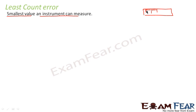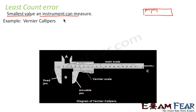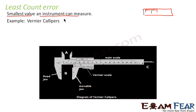When we talk of least count error, in case of certain instruments, the small division of the main scale doesn't coincide with the small division of the vernier scale. The best example of least count error would be the vernier calipers. Vernier calipers is an instrument used to measure the thickness or length of very thin objects which we normally cannot measure with our meter scale. In vernier calipers, we have a main scale and a vernier scale.